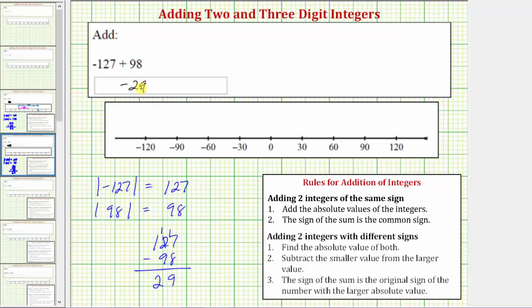Again, we should be able to recognize that this makes sense because the negative 127 outweighs the positive 98, resulting in a negative sum.